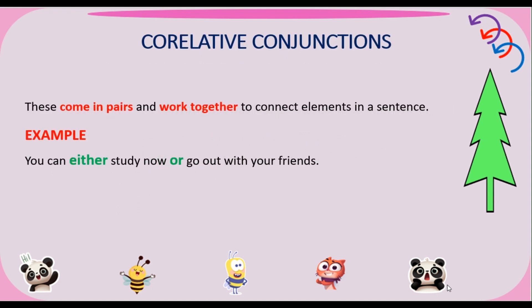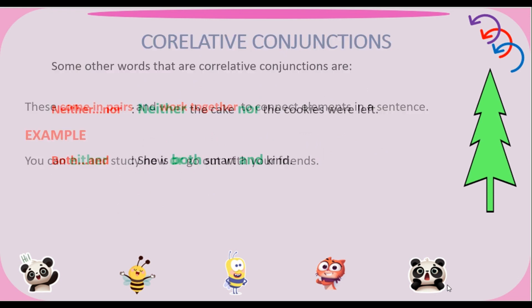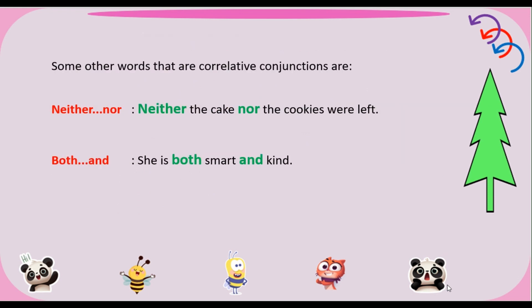Next is Correlative conjunctions. These come in pairs and work together to connect elements in a sentence. Example: You can either study now or go out with your friends. Some other correlative conjunctions: Neither/nor — neither the cake nor the cookies were left. Both/and — she is both smart and kind.